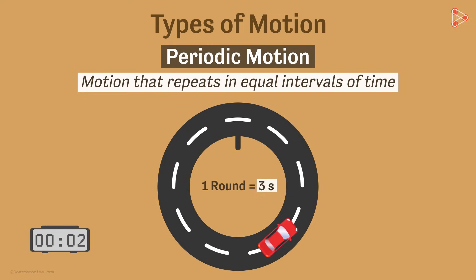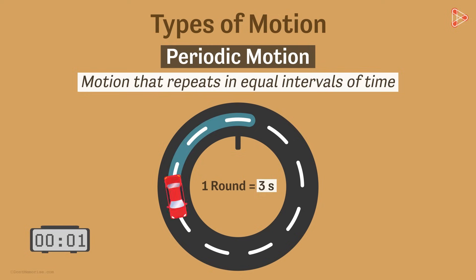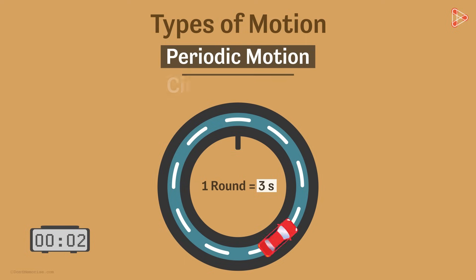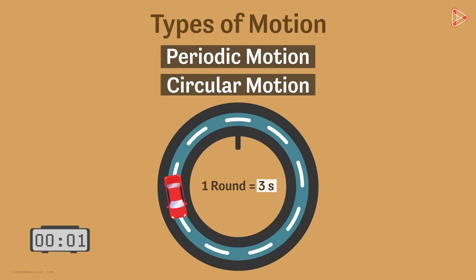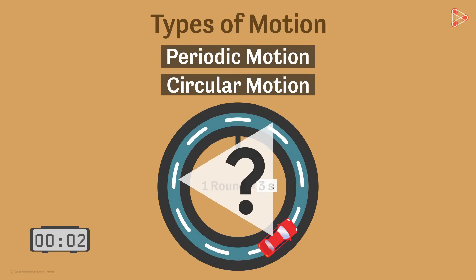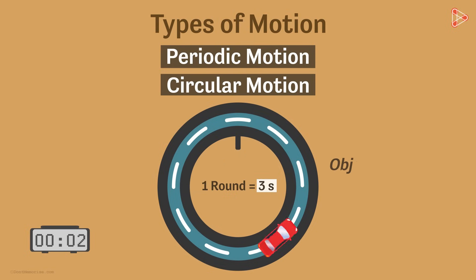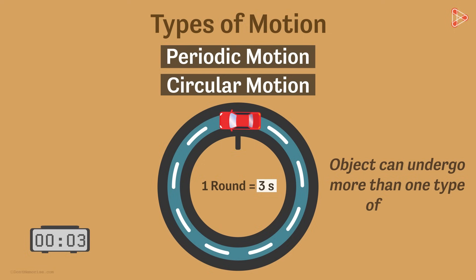But wait — this object is also moving along the circumference of a circle, so it is also undergoing circular motion. So what can you conclude? We can say that an object can undergo more than one type of motion at the same time.